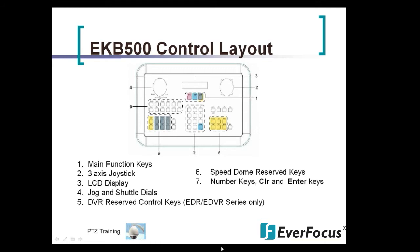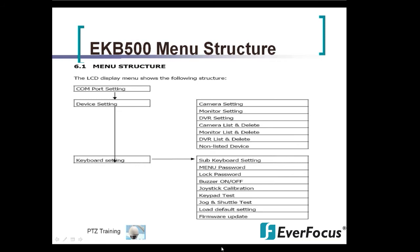The EKB500 will also control the e-cores and the Paragon units. Six is your speed dome reserved keys, and seven are your number keys, clear, and enter.